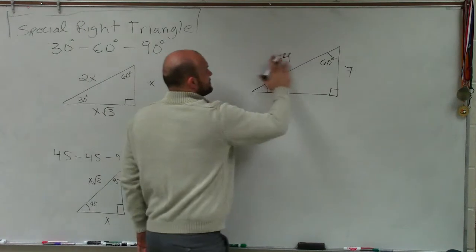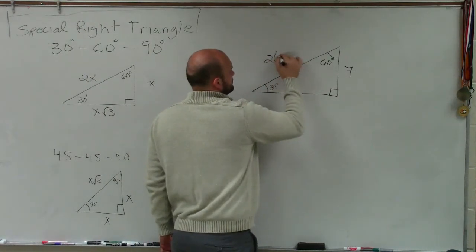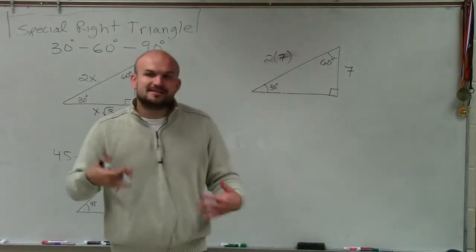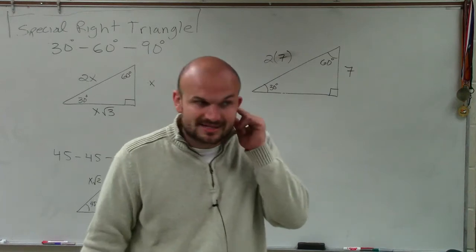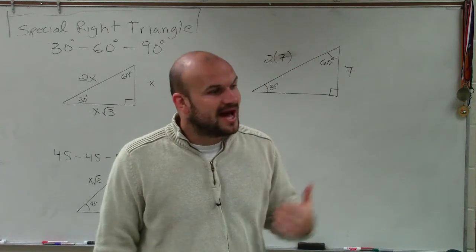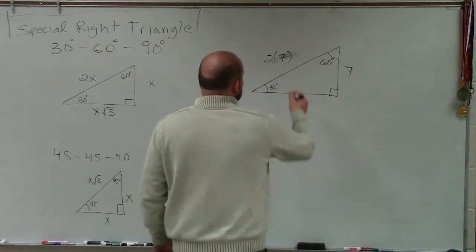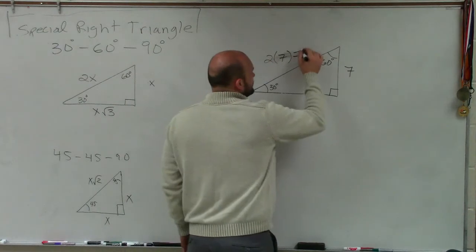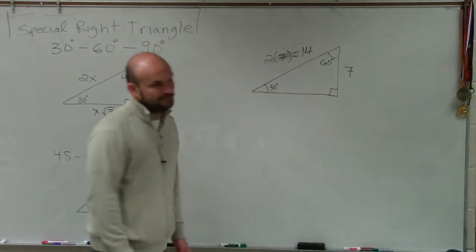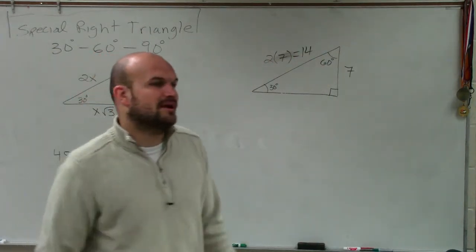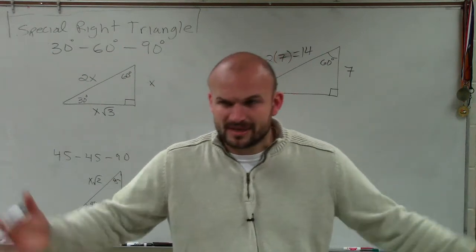Think about it this way — all I'm doing is representing my 7 as my x. So we say 2 times 7 equals 14. And we'll write it as 14, but I just want to show you where I'm getting this, or why I'm getting it.